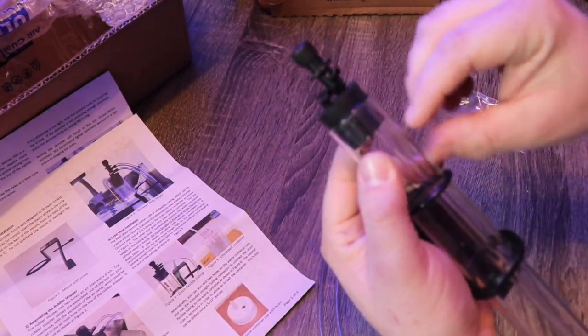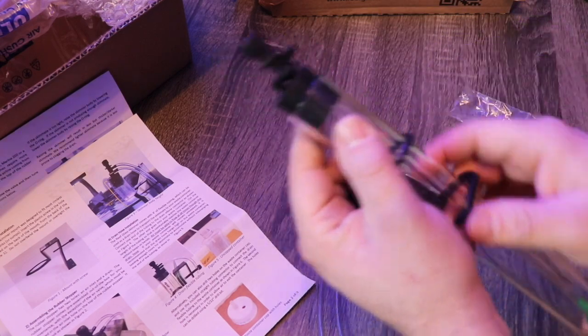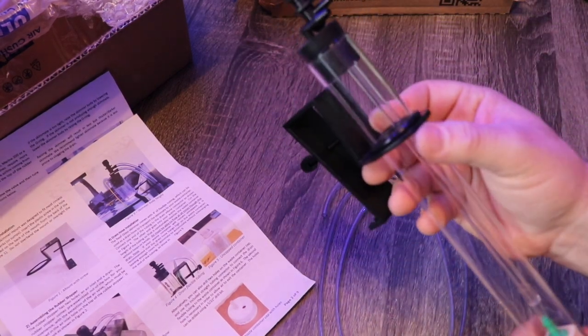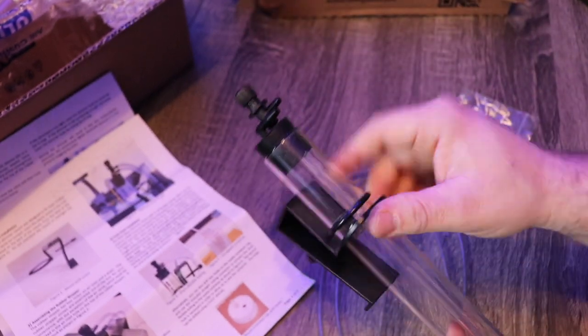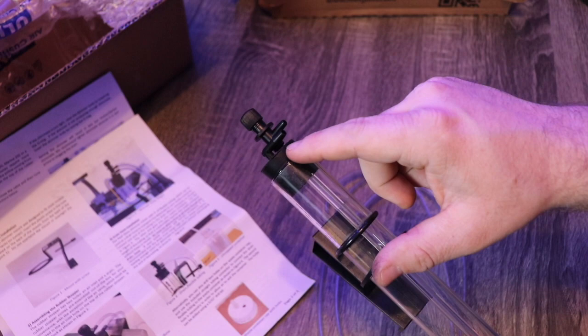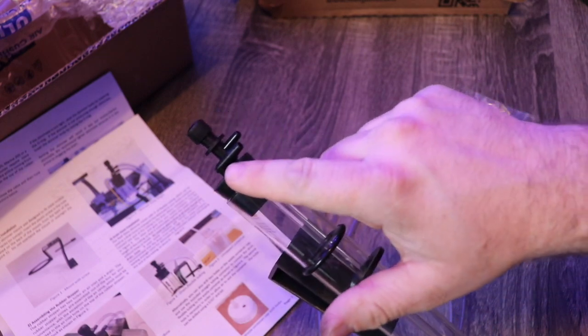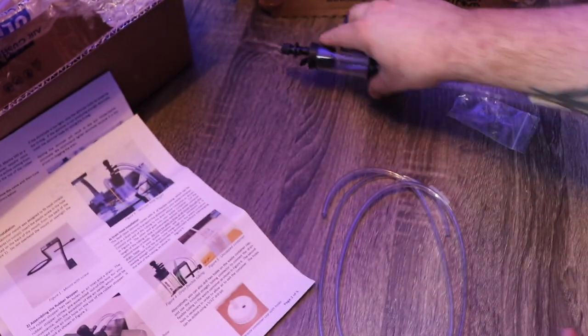And then what's going to happen is skimmate is going to come up to the top, obviously depending on what depth it's at, how much air you want to put into it, the right height. And as skimmate gets bubbled up the tube, it's going to come out this elbow and go into a collection cup.